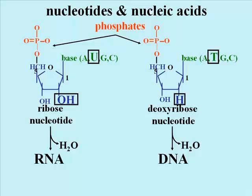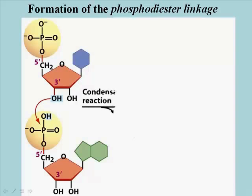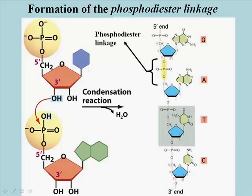Now these monomers are linked in condensation reactions to form either RNA or DNA. As you can see from this illustration, the nucleotides in a nucleic acid are linked by phosphodiester bonds, or more appropriately, phosphodiester linkages — the result again of condensation reactions.